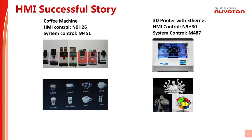Here we want to show two successful stories about Nuvoton HMI solutions. As you can see in the reference block diagram, both cases include two microcontrollers. The first case is a coffee machine — N9H26 is used for HMI control and N451 is used as a system host microcontroller. The second case is a 3D printer with Ethernet function — N9H30 is used for HMI control and N487 is used as the system host microcontroller.